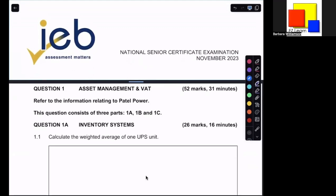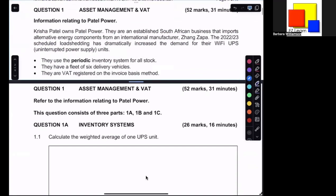In this lesson, we'll work through the IEB paper from November 2023, question 1a on inventory. Kresha Patel owns Patel Power, an established South African business that imports alternative energy components from an international manufacturer, Zang Zappa. The fact that it's an international manufacturer means we need to watch out for things like customs duties and exchange rates that might fluctuate.